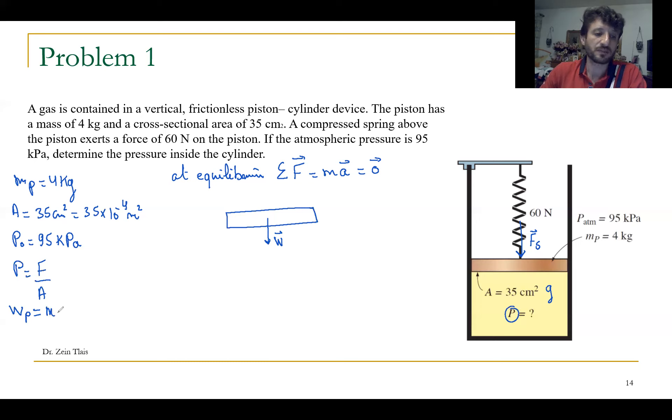So we have M of the piston times G equals about 40 meters per second square. Excuse me, Newton. 40 Newton.